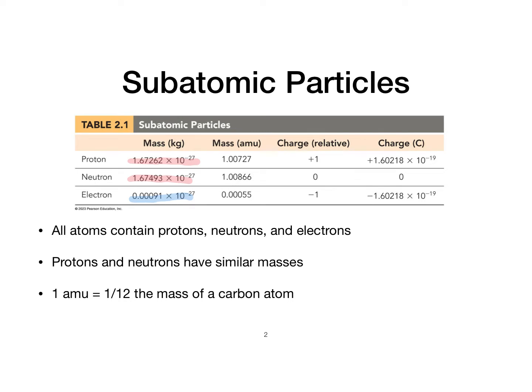The reality is those masses are quite small, so chemists developed a different system using one AMU — one atomic mass unit. The atomic mass unit is equal to one-twelfth the mass of a carbon atom. A carbon atom has some protons, neutrons, and electrons, and it turns out that the proton and the neutron are roughly about one AMU, while the electron is much less than that.